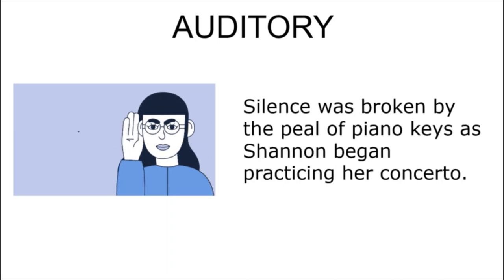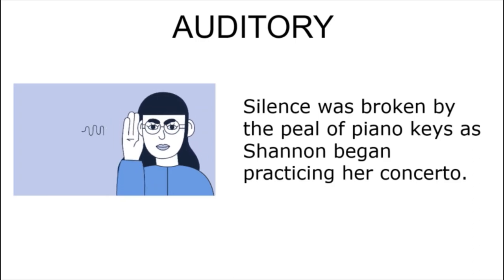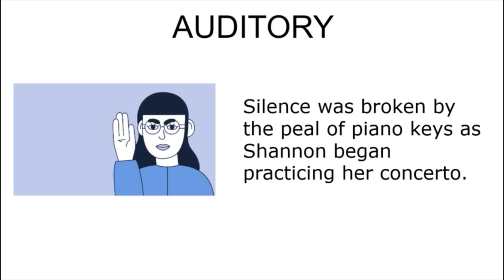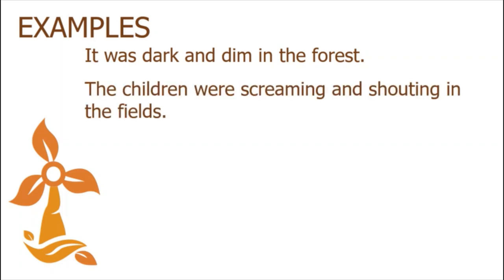For example: silence was broken by the peel of piano keys as Shannon began practicing her concerto. The sound of piano is an auditory image. Also, note that silence is also considered as auditory. There may not actually be sound produced when there is silence, but considering that you also use your hearing to know that it's actually quiet, it is considered auditory. Other examples include: 'It was dark and dim in the forest' — the words dark and dim are visual images. 'The children were screaming and shouting in the fields' — screaming and shouting appeal to our sense of hearing.